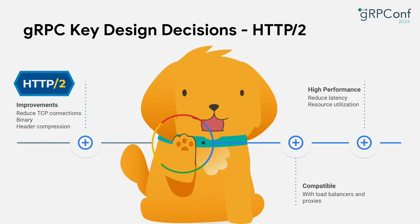Another key design decision is that gRPC is built on top of HTTP/2, making it compatible with a variety of load balancers and proxies over the wider internet. HTTP/2 reduces TCP connections, is binary, and uses header compression — all of which makes gRPC high-performance, reduces latency, and makes better use of resources.